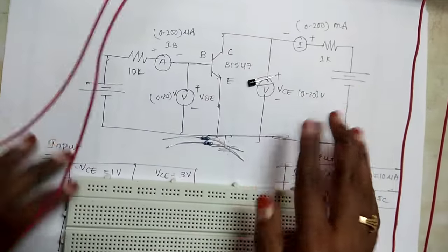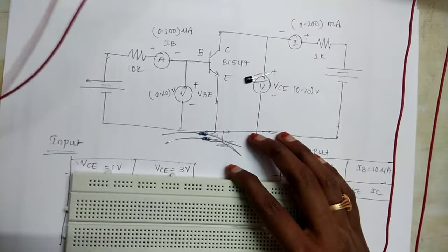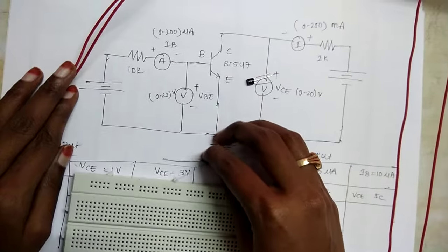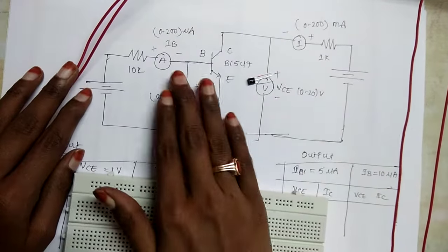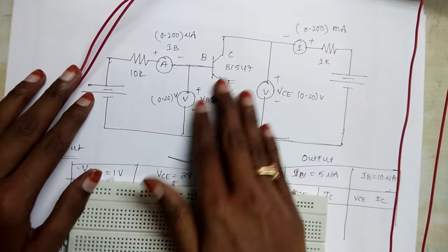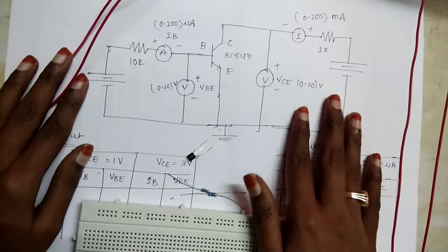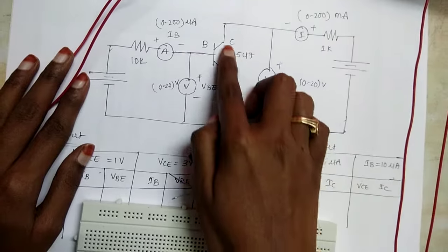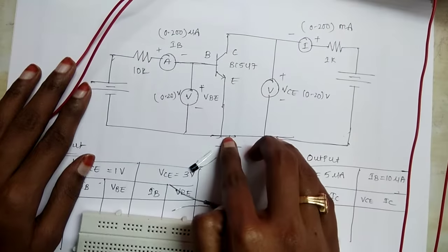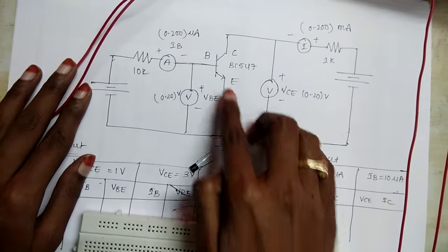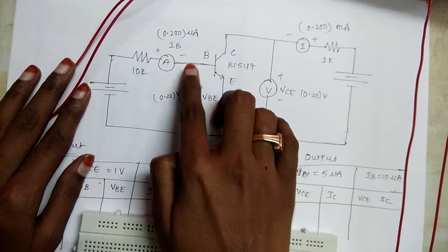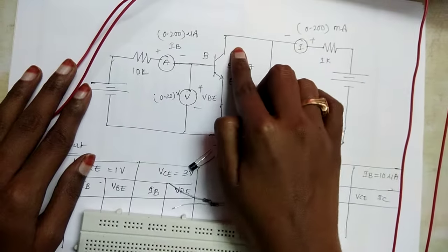Now let us perform the experiment on input and output characteristics. We are connecting the transistor in CE configuration, where the emitter is grounded and common to both base and collector.